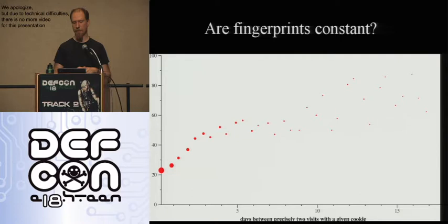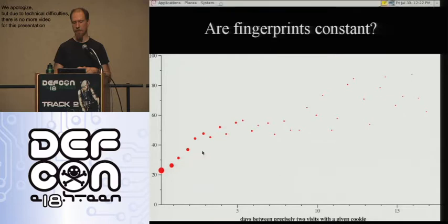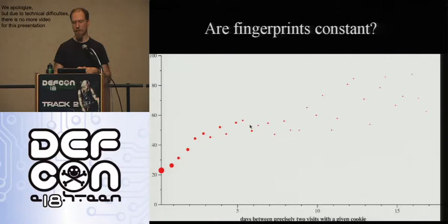We just wanted people who came exactly twice with at least an hour or two in between visits — so they didn't just hit reload, they came back later. Then we asked: as a function of how much later they came back, what was the probability that their fingerprint had changed? We measured this with cookies, so there was a cookie you could reliably use to see the same person and then check if the fingerprint changed.